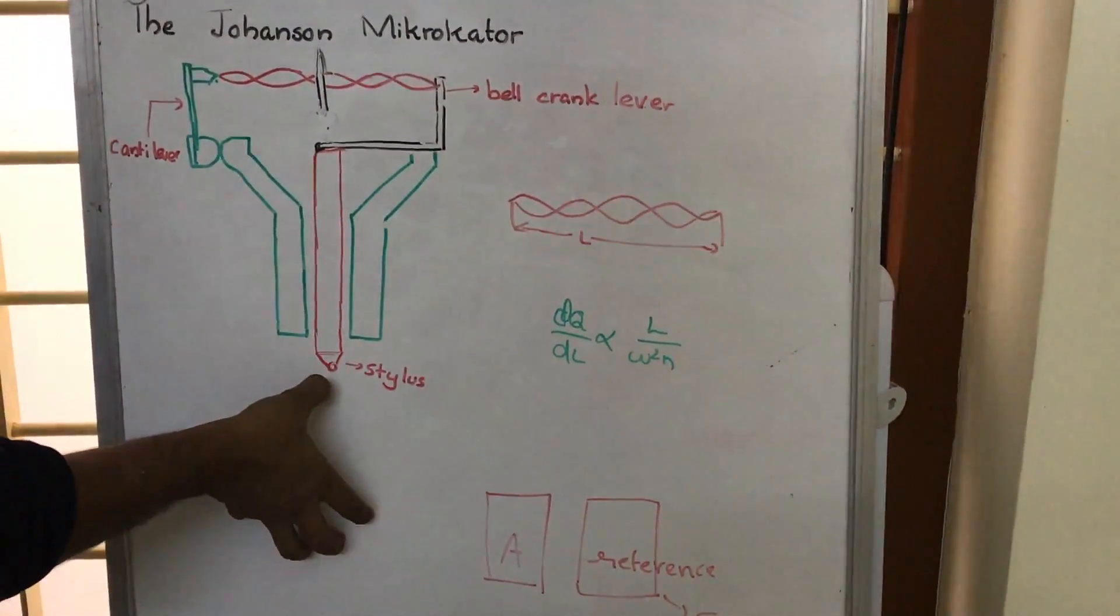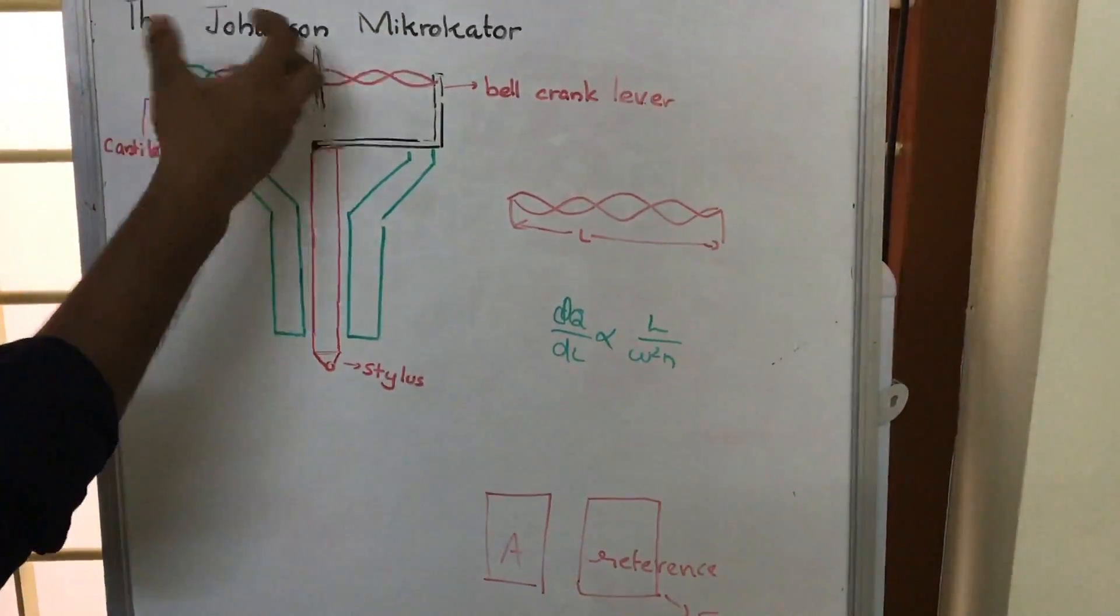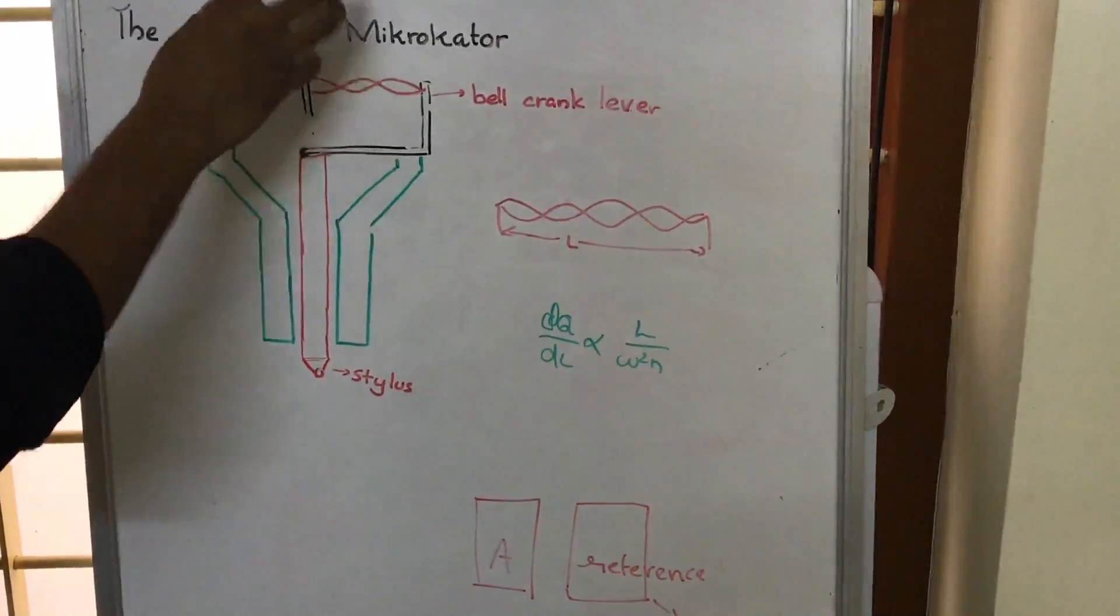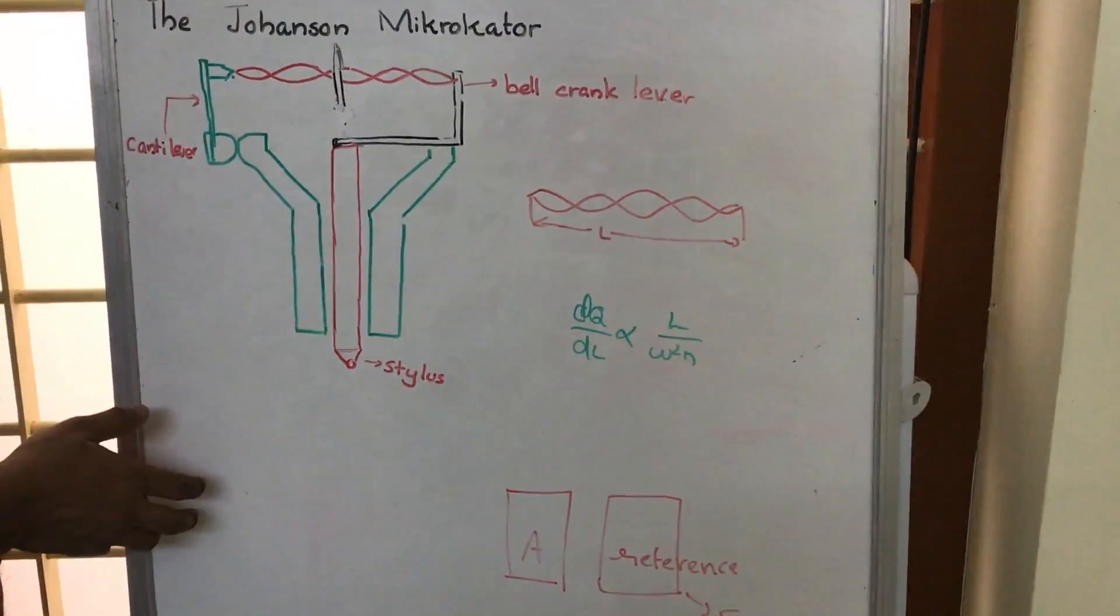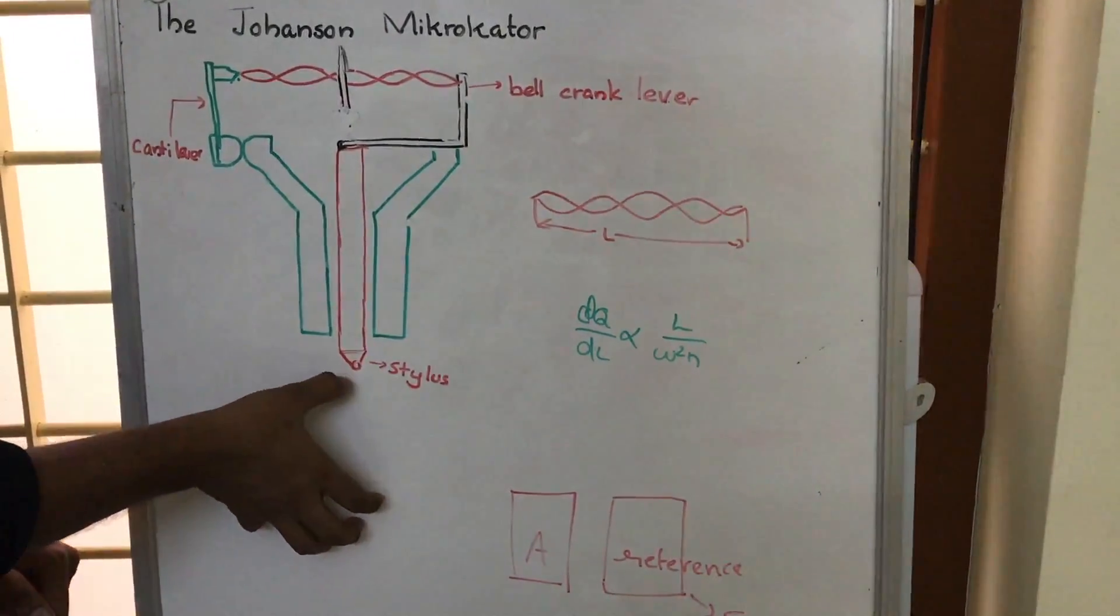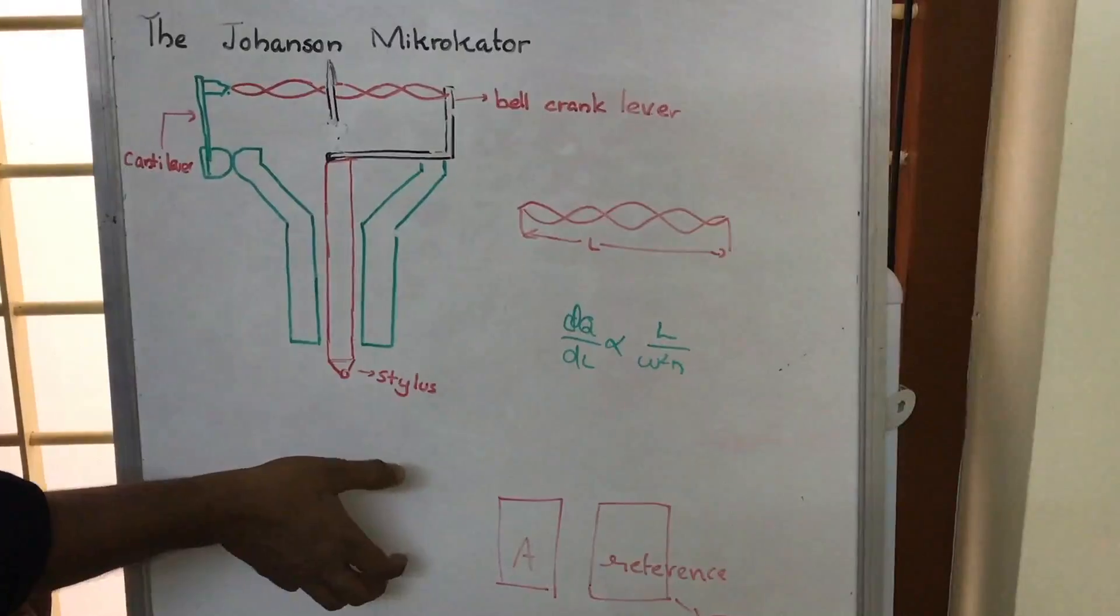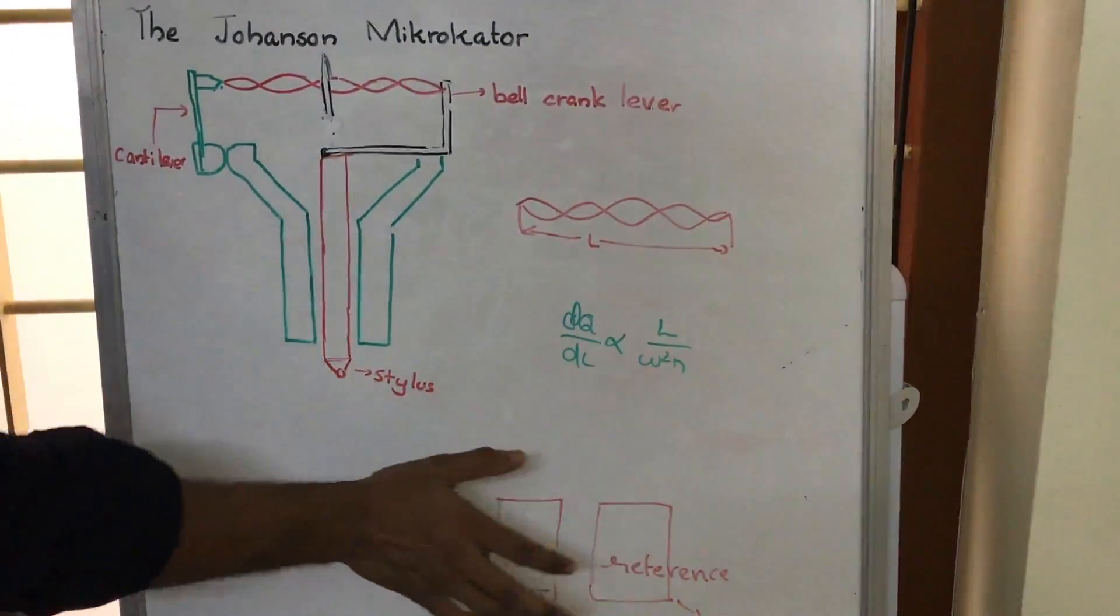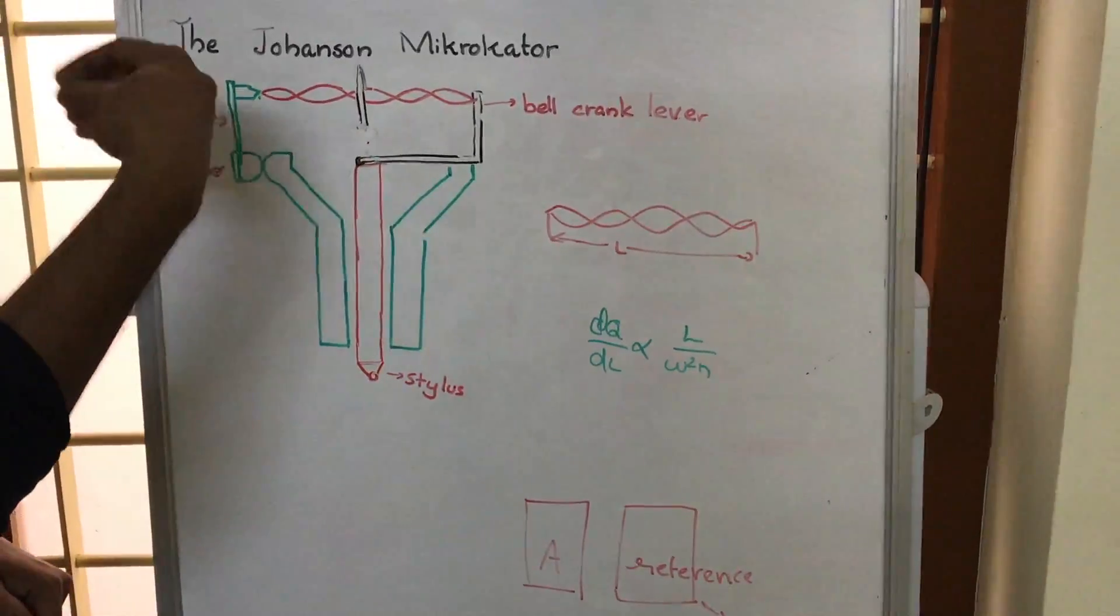First, we place the reference and the needle acquires a particular position, which we set to zero. After that, we replace the reference with body A, whose dimensions are to be measured. If there is some change in dimension of body A with respect to the reference, the needle will move, and this movement will be calibrated.